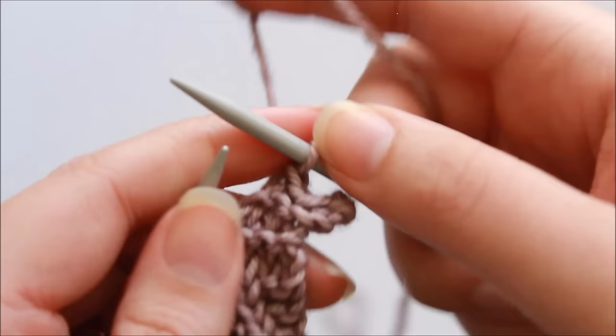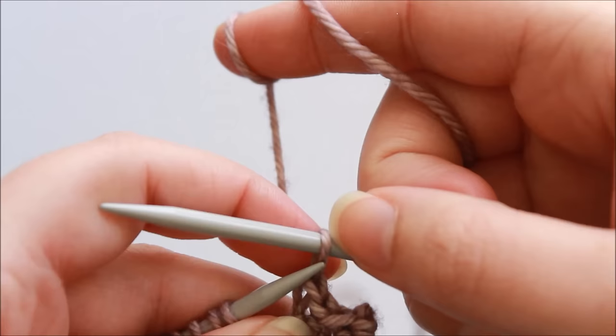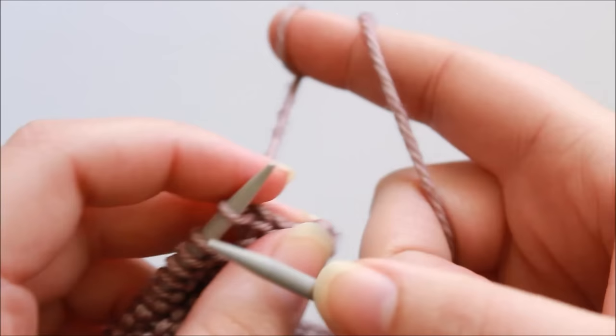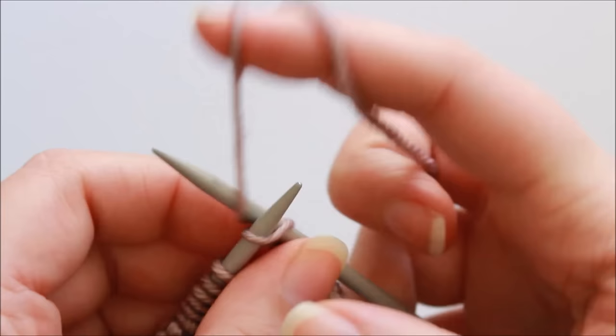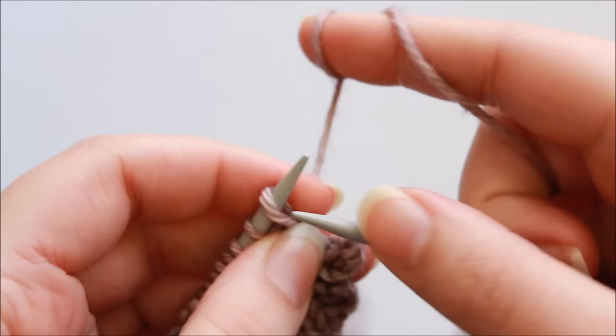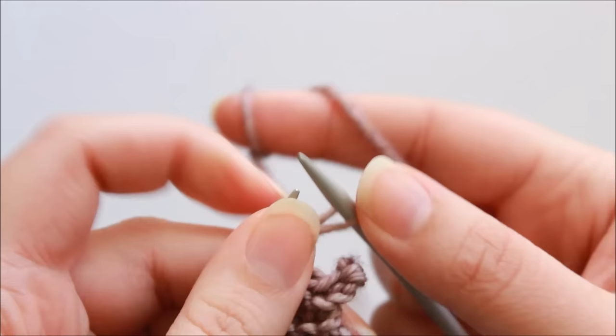So to continue to repeat, I've got this stitch on my right hand needle and I slip it back to the left hand needle, and then we begin from the cast on. So cast on two stitches using the knitted cast on method, so as if I'm knitting it but put that loop on the left hand needle, that's one, and that's two.